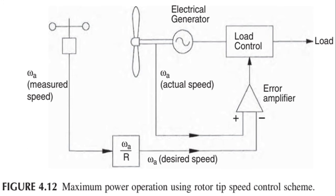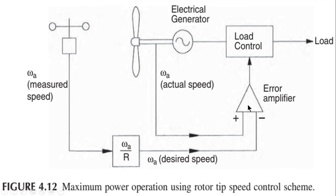This is an illustration of the maximum power operation scheme using the rotor tip speed control. The anemometer measures the actual wind speed, and this measured speed is compared with the desired speed at which the generator should be moving. Both the actual wind speed and the desired speed are fed into a comparator.